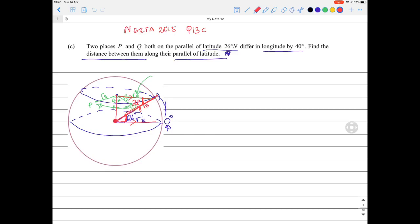Now if I take that triangle out, I have something like this. I have radius of the small circle, radius of the earth, and I have 26 degrees there. Let's pause for a minute on that point. What we need to find is the length of the arc, the distance between P and Q.